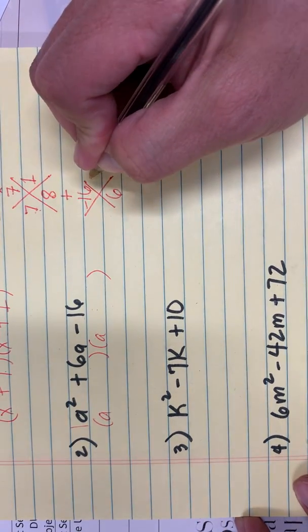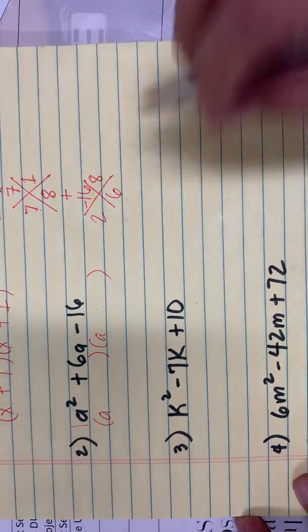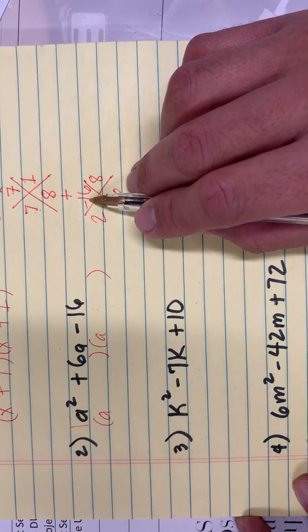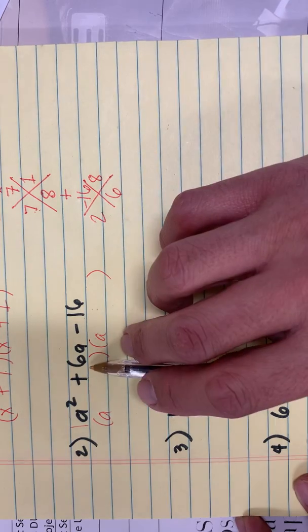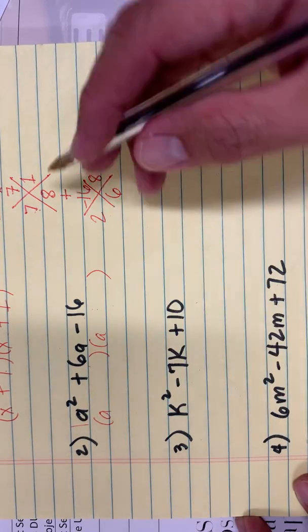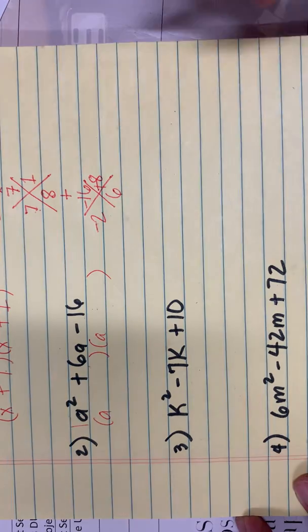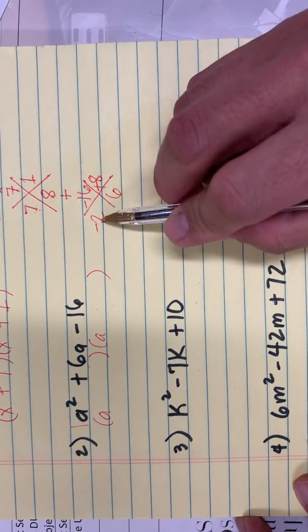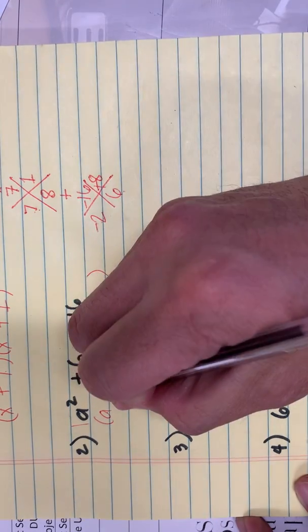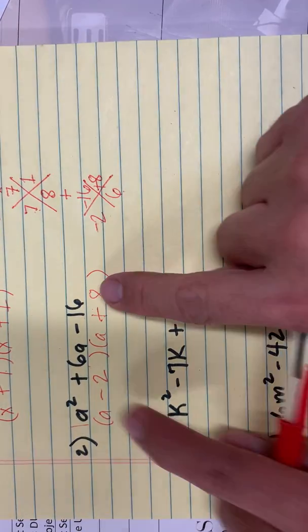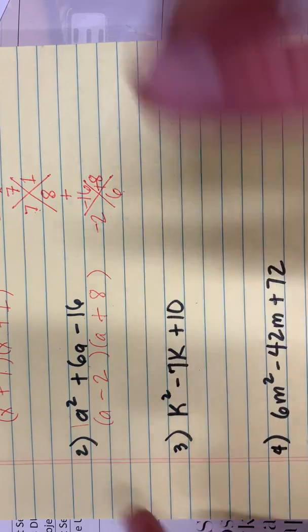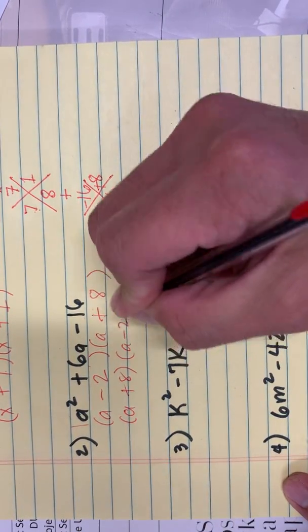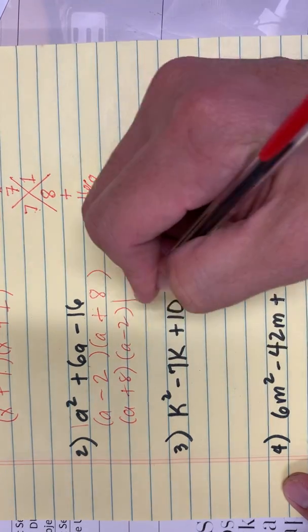That's going to be 8 and 2. But since this is negative 16, their sign should be different, and the B is 6. So this will be positive 8 and negative 2. Because 8 times negative 2 is negative 16, 8 minus 2 is 6. So this will be minus 2 plus 8. You can swap them, but they have to carry their sign.